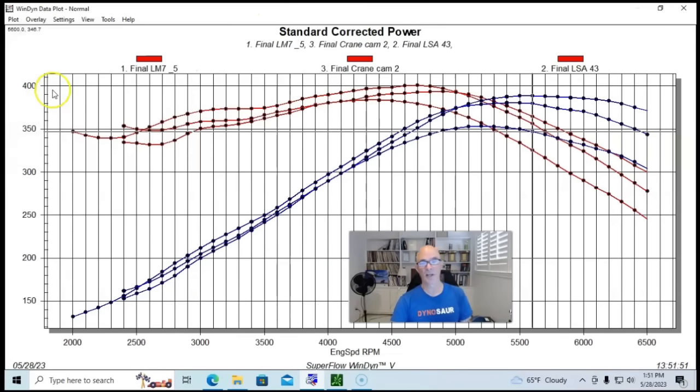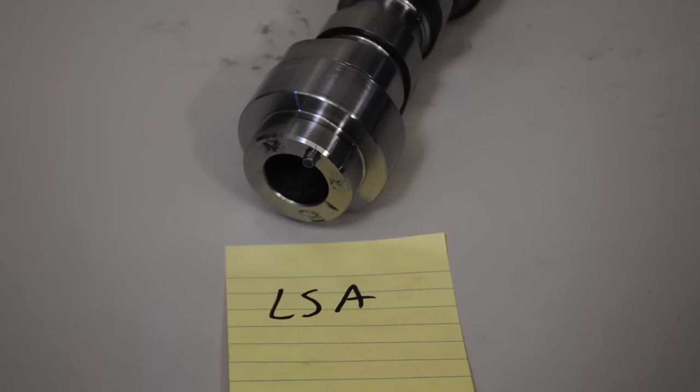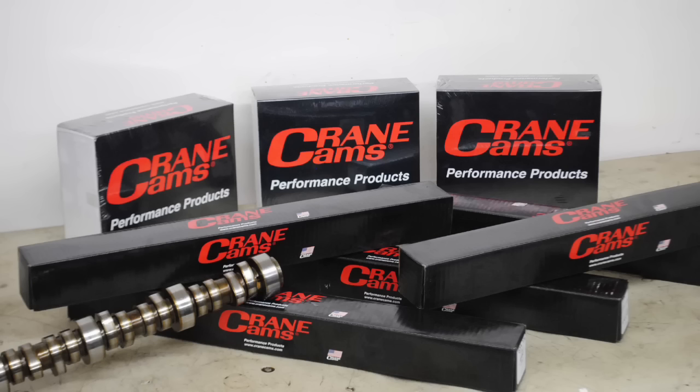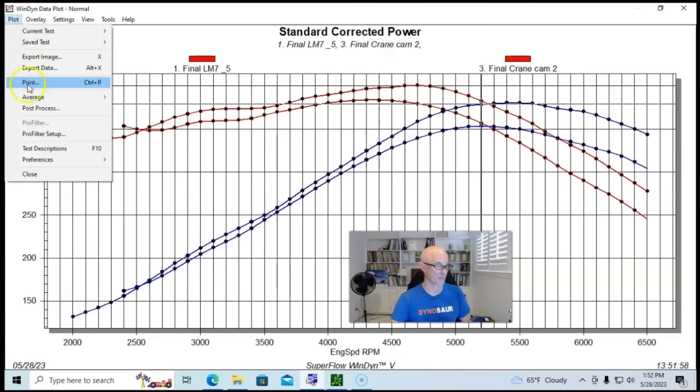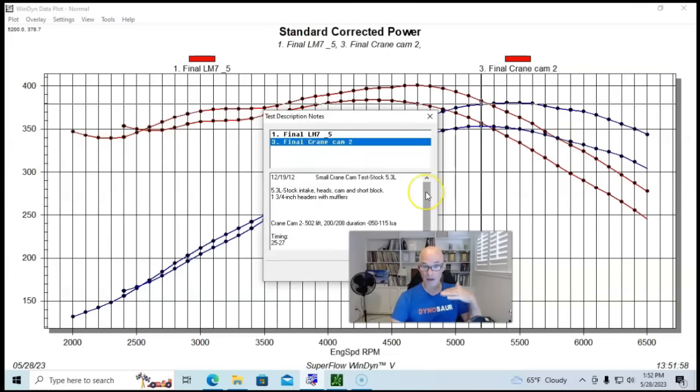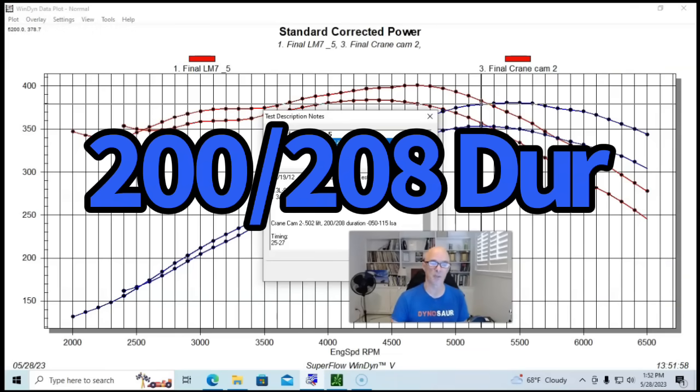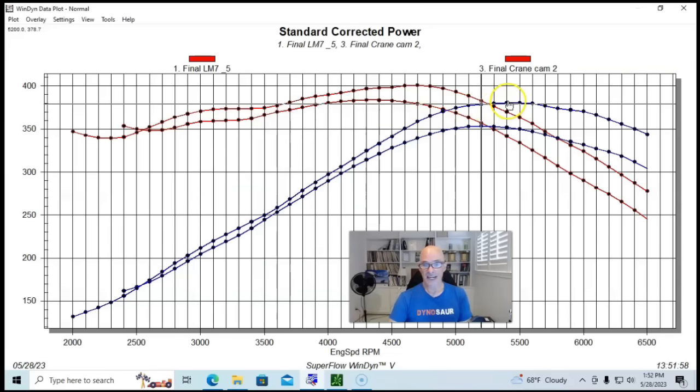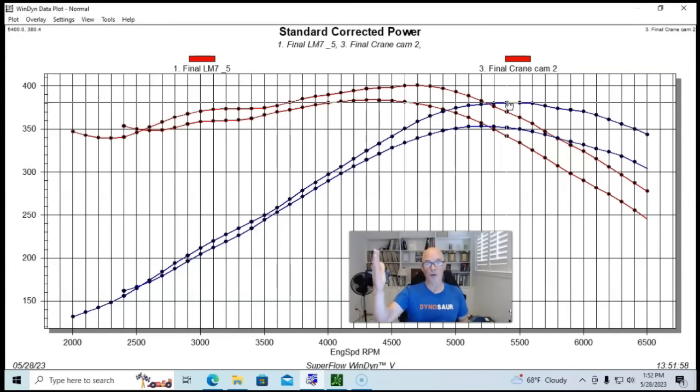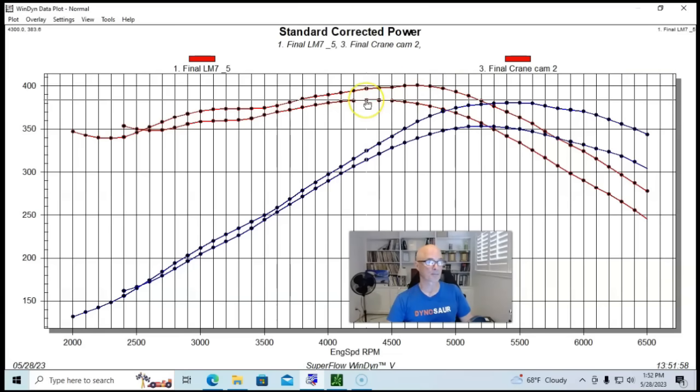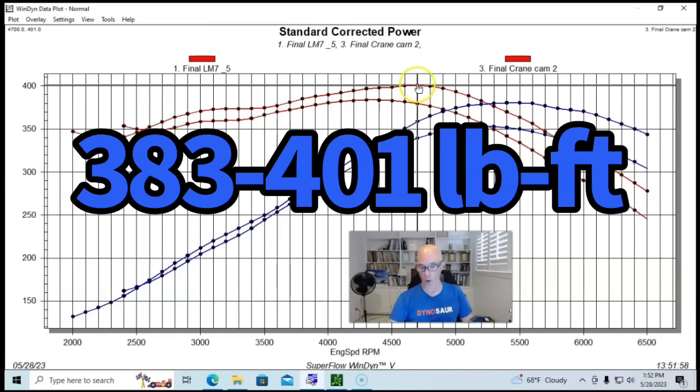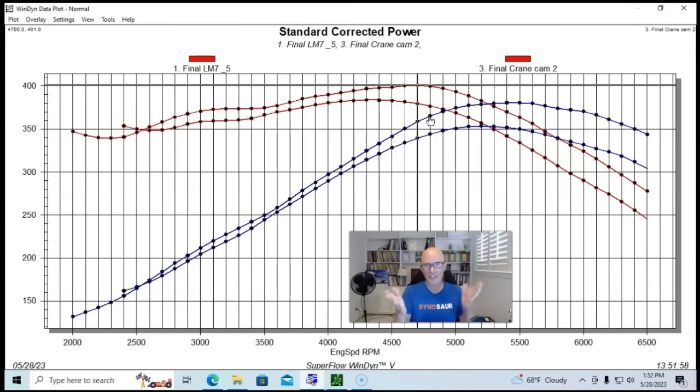Here's another example. If you didn't want to use a factory camshaft, this is an aftermarket cam. This one was from Crane, right at our limit of 200 degrees of duration. It was 0.502 lift, 200-208 degree duration split, and 115 degree lobe separation angle. You can see it gained around the same power. It was still in the low 380 range. Peak torque was up from 383 to 401 foot-pounds. A little more than our 15 foot-pound range, but you can see this is the kind of thing you're looking for. If you get a camshaft between 190 and 200 degrees of intake duration, you can juggle the other things around, but these are the kinds of gains you're looking at.